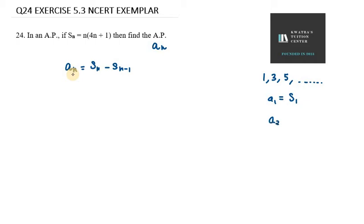If I say I want to find a2 from sum, what do we do? First of all, we will find the first two terms. It is S2. We will do S2 minus S1. So here is our general equation, An.